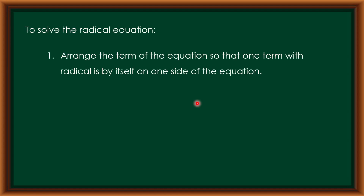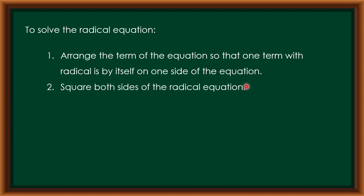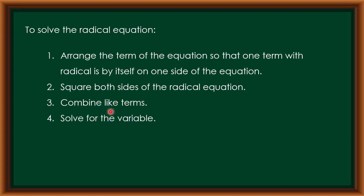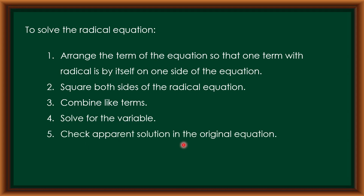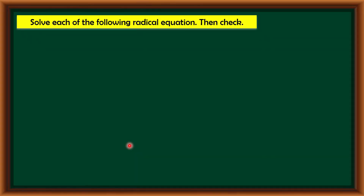How to solve the radical equation? First, arrange the terms so that one term with a radical is by itself on one side of the equation. Second, square both sides to remove the radical sign. Next, combine like terms and solve for the variable. Last, check the apparent solution in the original equation.